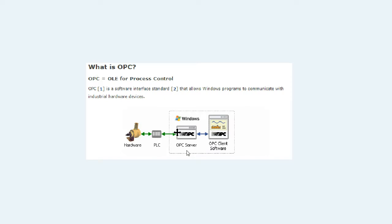The server can serve data to any number of OPC clients that read the data from the server. Typically, the client software resides on the same PC as the server software — it doesn't have to be, but that's generally how it's done. StripChart OPC is basically client software, and it relies on a server installed on the user's computer to access the data in the PLC.